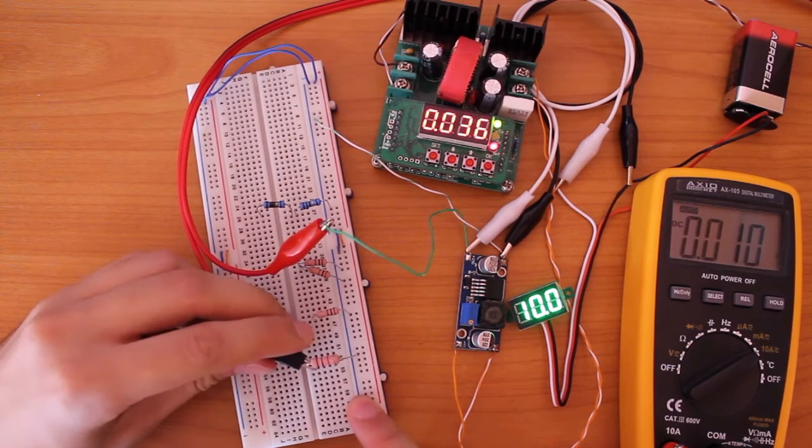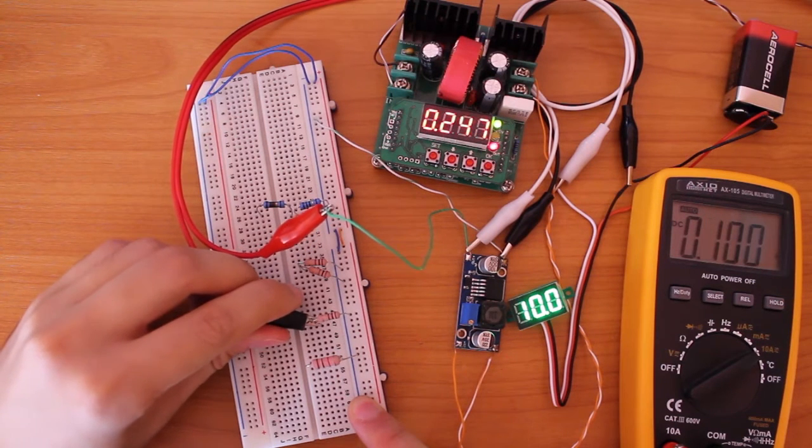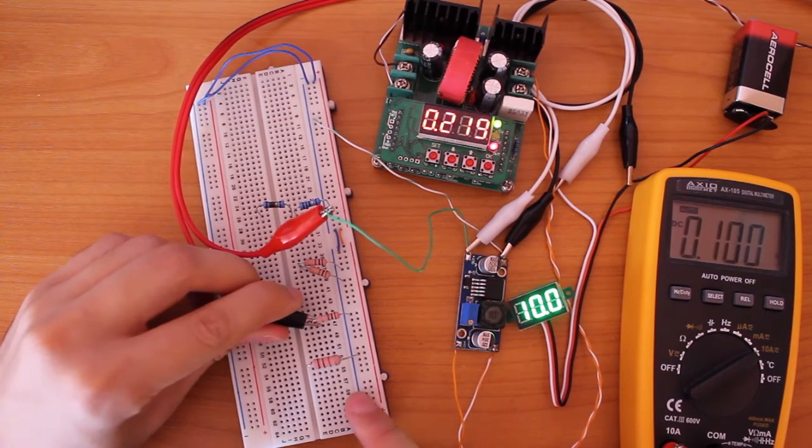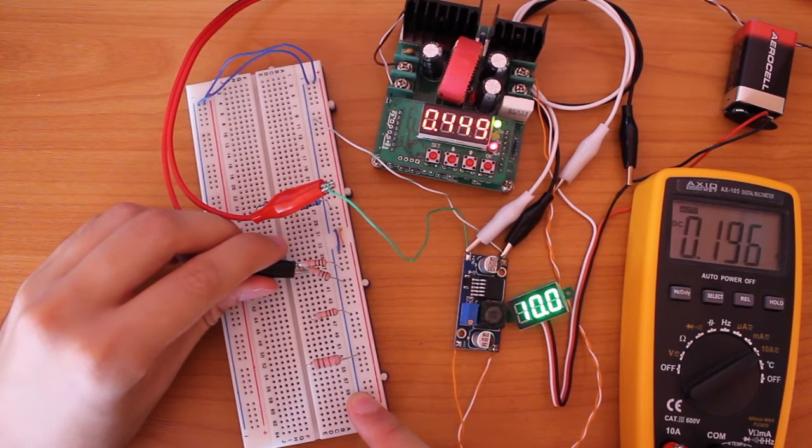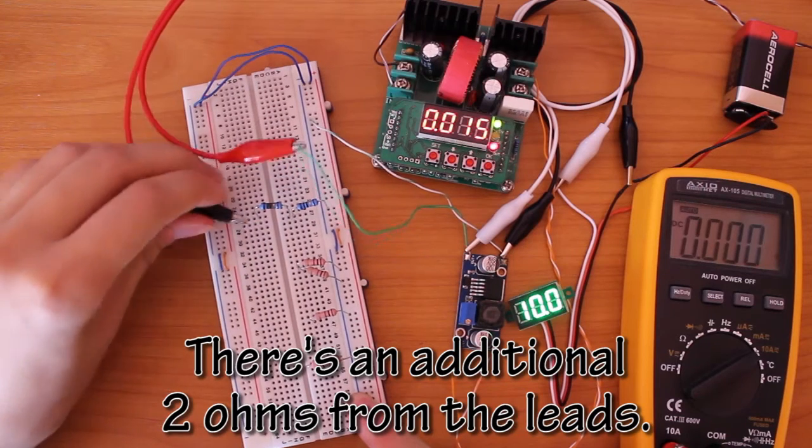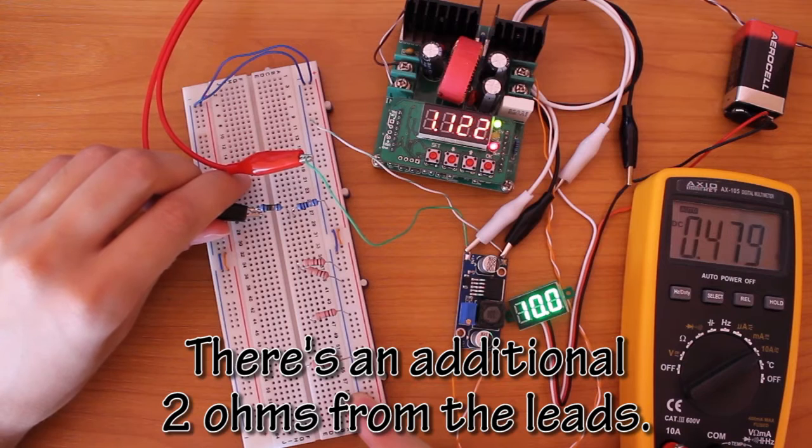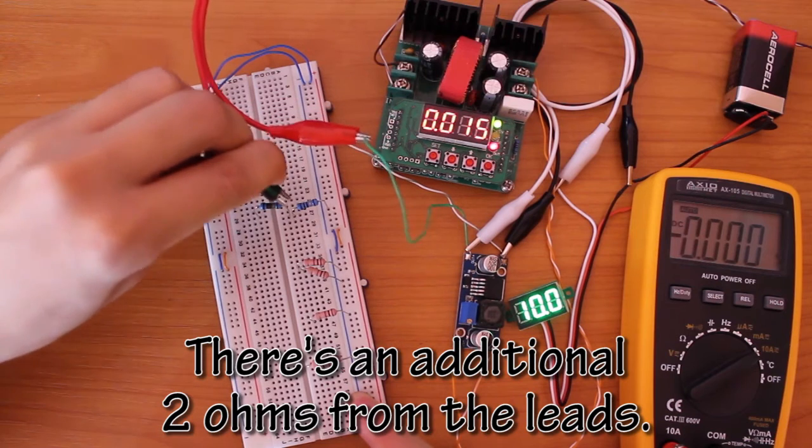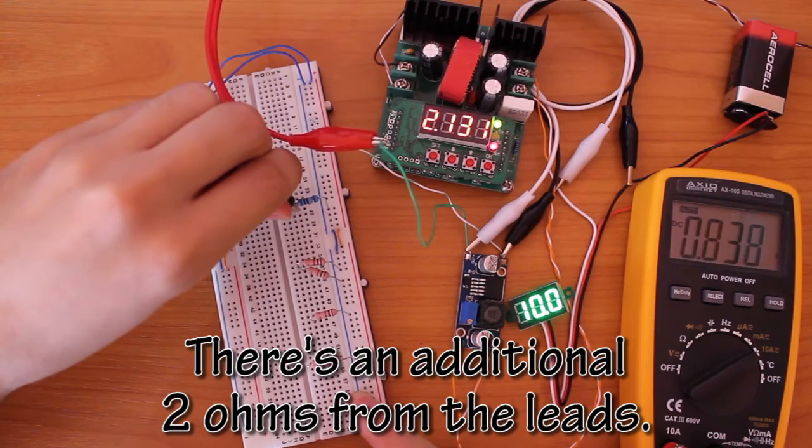100 ohms. You can see the voltage is pretty stable. 50 ohms, 20 ohms, and let's try 10 ohms, and again pretty stable.